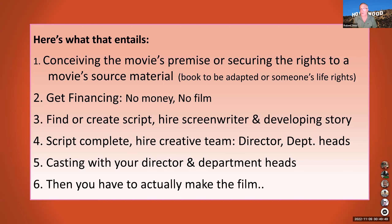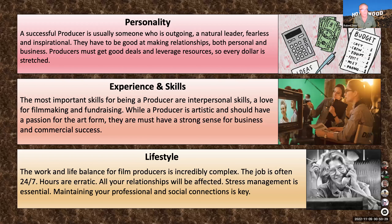What producing entails: conceiving the movie's premise or securing the rights to source material; getting financing — no money, no film. Producers find or create a script, hire a screenwriter, develop the story, then hire the creative teams — the director, department heads — and move on to casting. The most important skill for being a producer is interpersonal skills, a love for filmmaking and fundraising. While a producer is an artistic person, they must have a strong sense for business and commercial success.